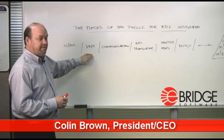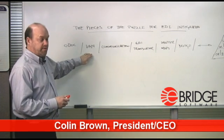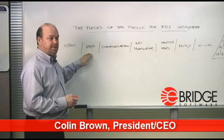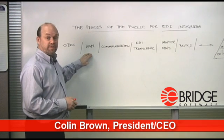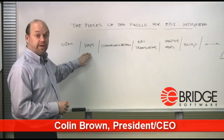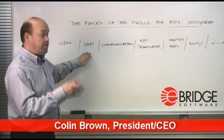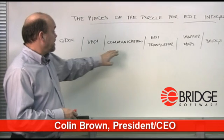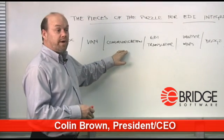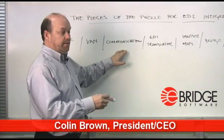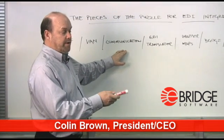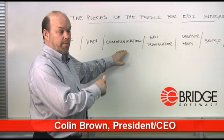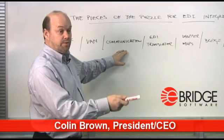There's often a VAN involved — those are value-added networks. Basically, they're mailboxes for moving and transforming business documents. Communication is required to move the documents from one mailbox to another.